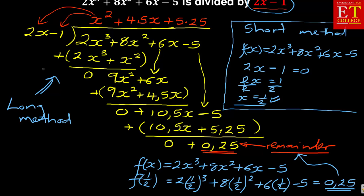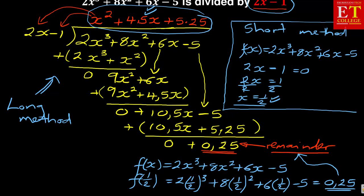And if you still remember, this is the same answer that we got under the remainder of the long division, which was 0.25. So I'm saying there is a longer method that will still help you get the remainder, and the importance of the longer method is that it allows you to get the quotient — the top part — which you need for factorization. At the same time, the remainder can be found using the short method: equate the divisor to 0, find x, then substitute into f of x to quickly get your answer. We have come to the end of our lesson. There are more problems on the remainder theorem — keep checking them out. Thank you.